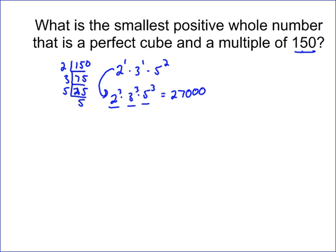And 150 does go into 27,000. So that is your answer, 27,000. That is the smallest positive whole number that is a perfect cube and is a multiple of 150.